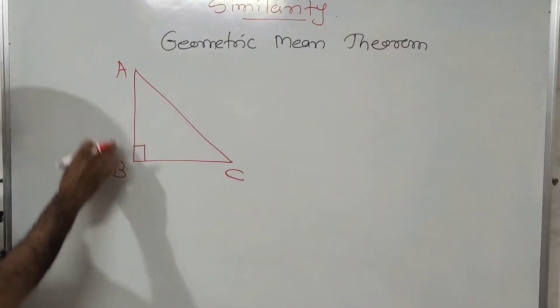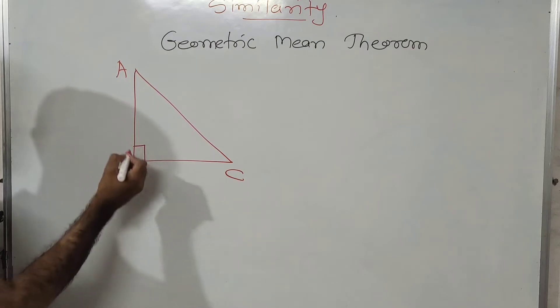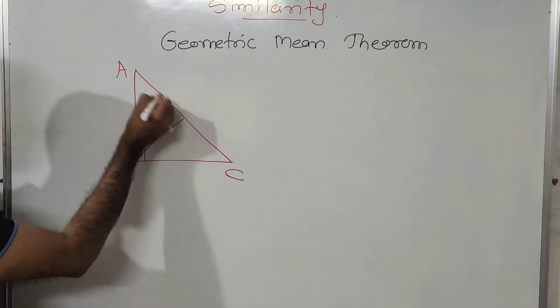Suppose this is a right angle triangle ABC where angle B is 90 degrees. Now if you draw a perpendicular from angle B to the hypotenuse AC.